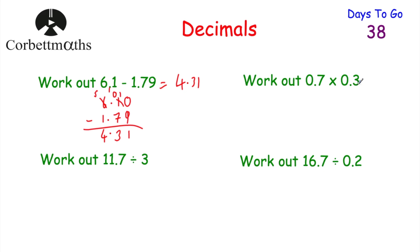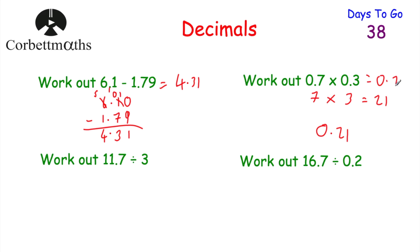Next, we're going to multiply 0.7 by 0.3. One approach: multiply each number by ten to get 7 and 3, then do 7 times 3 equals 21. But we've made our answer a hundred times bigger, so divide by a hundred: 21 ÷ 10 = 2.1, then ÷ 10 again = 0.21. So the answer is 0.21.